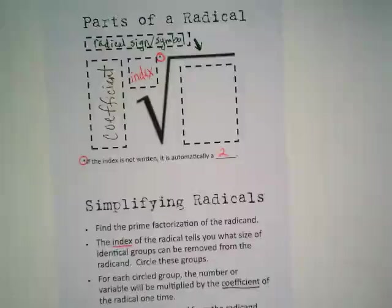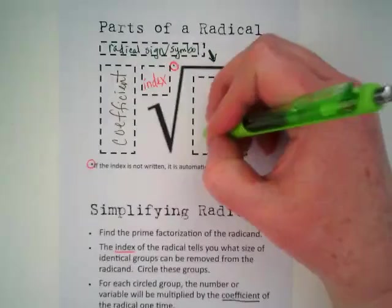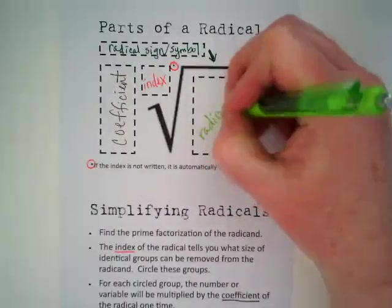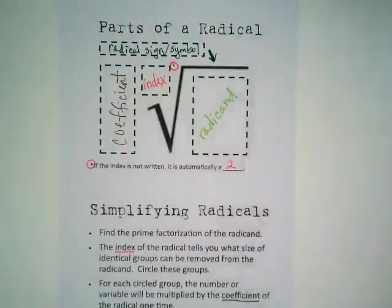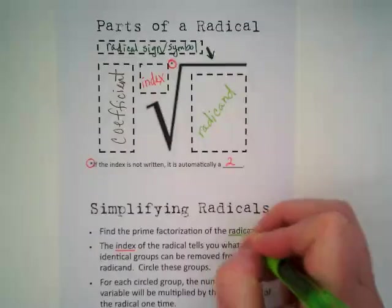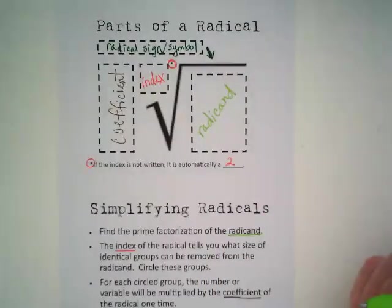And our final piece of a radical is the radicand, and it will get you the most underlines. It's whatever is inside the radical symbol.